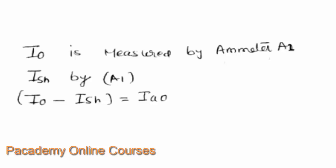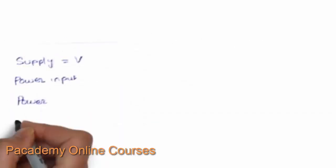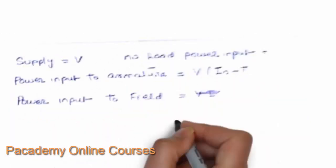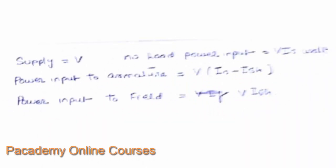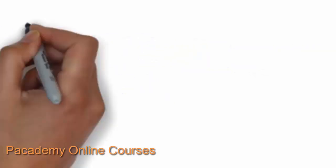I0 minus ISH gives the armature current IA0 — that is, supply current minus field current equals armature current. The supply voltage is V, and the power input to the armature is V multiplied by (I0 minus ISH). The power input to the field winding is V·ISH. So you can find the power input to both the armature and the field.